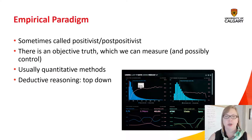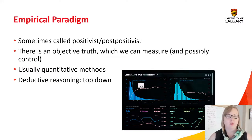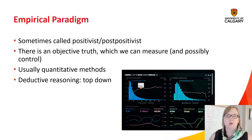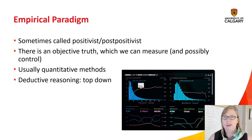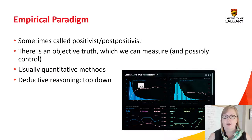If you were doing an empirical study on poverty, you might say we're going to give everyone a universal basic income and measure outcomes before and after. It's about objective reasoning and making changes in an environment to isolate the impact of different factors. Studies in the empirical paradigm are usually quantitative and tend to use top-down reasoning — starting with a hypothesis like 'poverty exists,' measuring it, then confirming or denying that hypothesis.